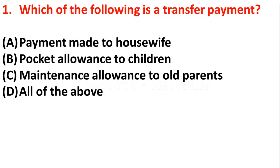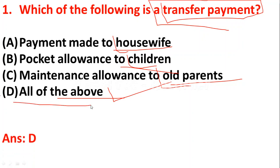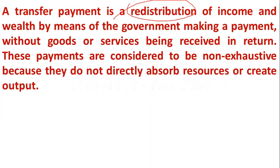The first question is: which of the following is a transfer payment? Transfer payment means the government pays money to citizens for nothing — in return they won't get any good or service. Options: A) payment made to housewife, B) pocket allowance to children, C) maintenance allowance to parents, D) all of the above. The answer is D — all of the above. Transfer payment means it is a redistribution of income and wealth by means of the government making a payment without goods or services being received in return. These transfer payments are considered non-exhaustive because they don't directly absorb resources or create output directly.